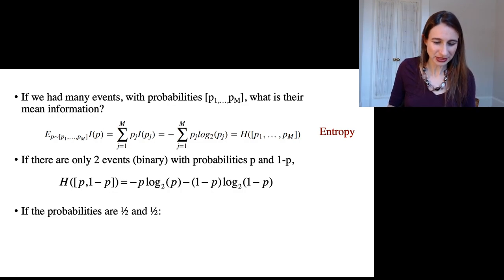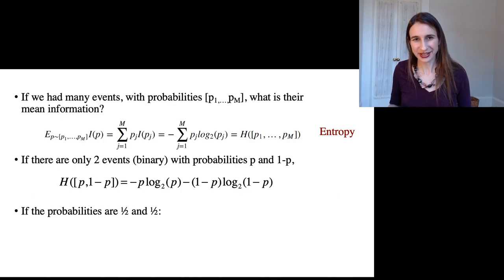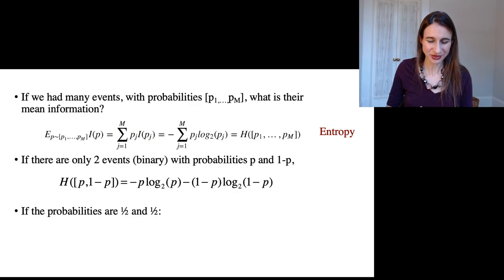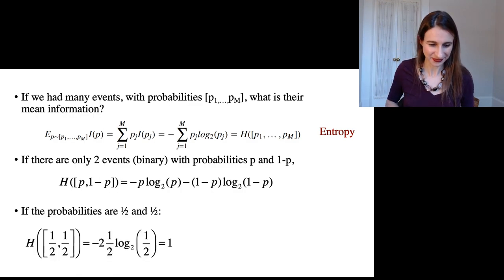So if the probabilities are 1/2, 1/2, fair coin, then the entropy is what? Well, if we see the coin land on heads, that's one bit. If we see the coin land on tails, that's one bit. And so the average is one bit.